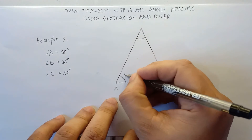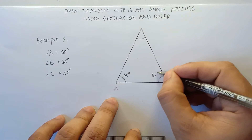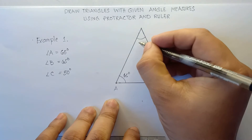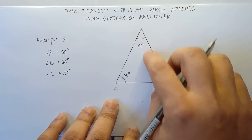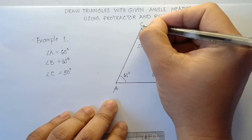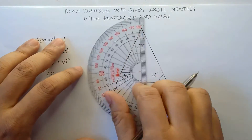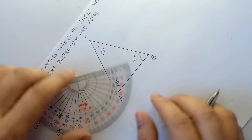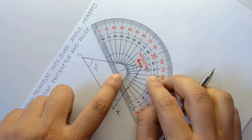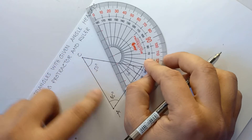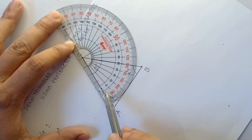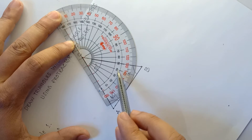Our angle A is 65 degrees, angle B is 65 degrees, therefore angle C is 50 degrees — because 65 plus 65 is 130, plus 50 is 180. Let's check if this is really 50 degrees for angle C. We align the center part of the protractor at point C, then align 0 on this particular line. Counting: 10, 20, 30, 40, 50 degrees. Exactly 50 degrees!